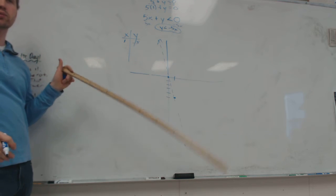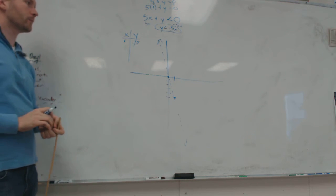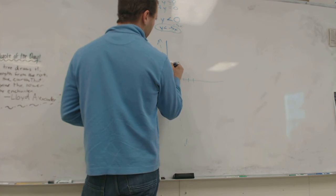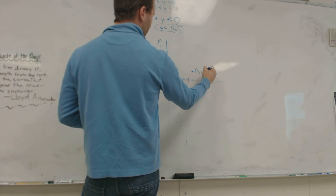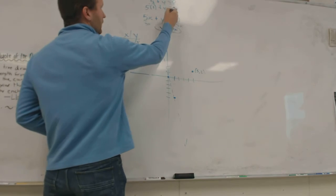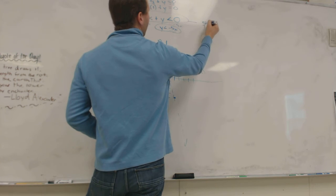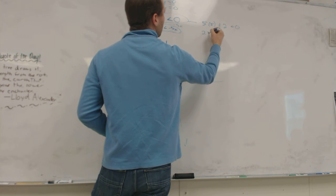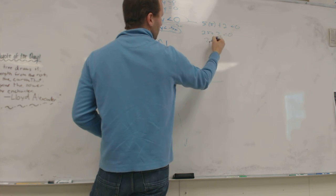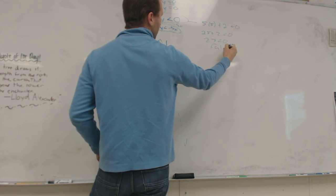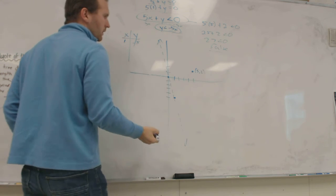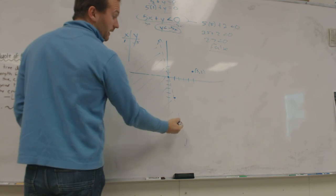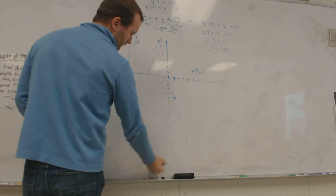Now, who can give me a point that I can plug in to figure out which way to shade? 5, 2. 1, 2, 3, 4, 5, and 2. So this point right here. Plug it into this one. So 5 times 5 plus 2 is less than 0. 25 plus 2 is less than 0. Is that true? Yeah. No way. 27 is definitely not less than zero. So I'm going to shade away from that point. Maybe if it was negative. Right. And I'm done.